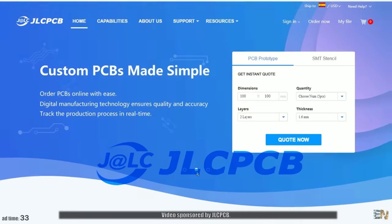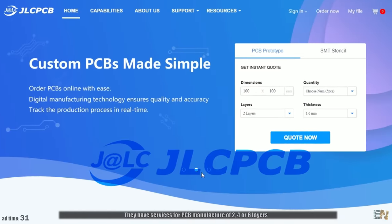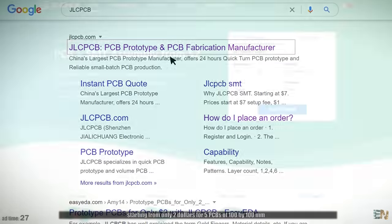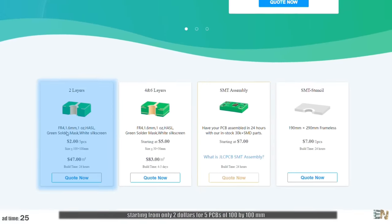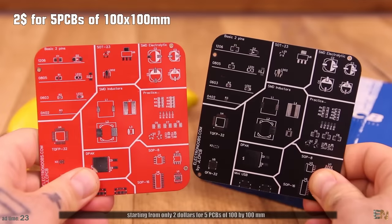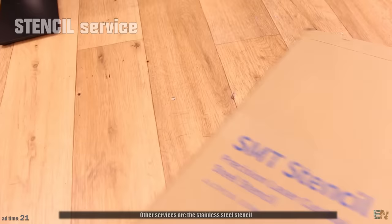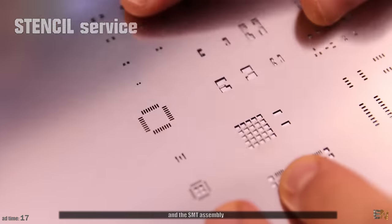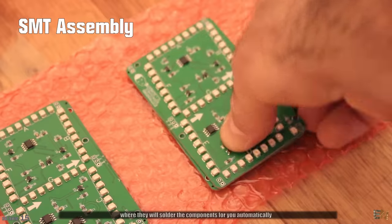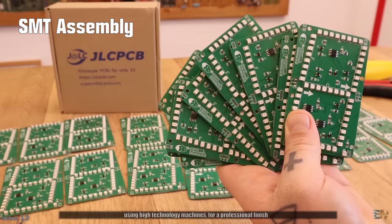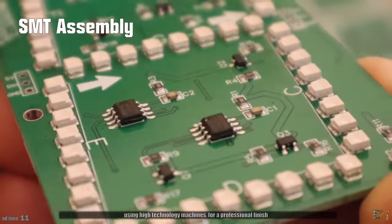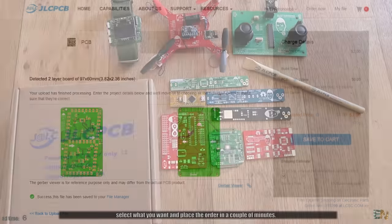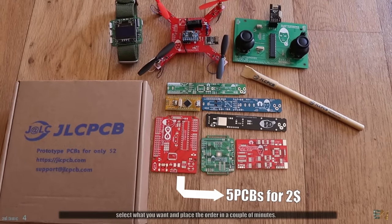Video sponsored by JLCPCB. They have services for PCB manufacture of 2, 4 or 6 layers starting from only $2 for 5 PCBs of 100 x 100 mm. Other services are the stainless steel stencil for soldering with solder paste and the SMT assembly where they will solder the components for you automatically using high technology machines for a professional finish. So just go to jlcpcb.com, upload the gerbers, select what you want and place the order in a couple of minutes.